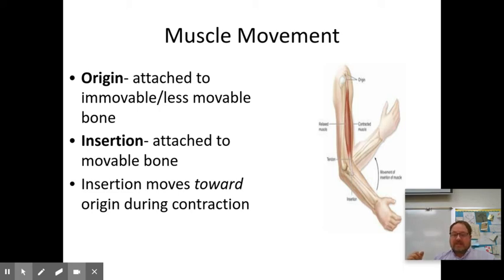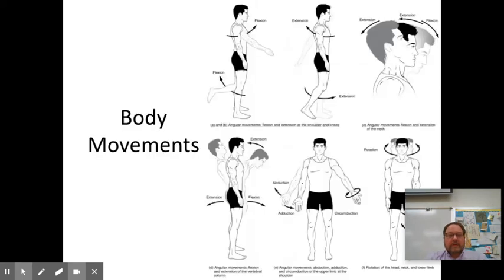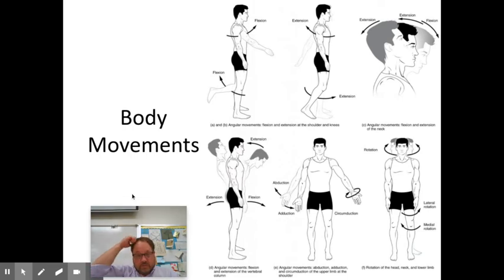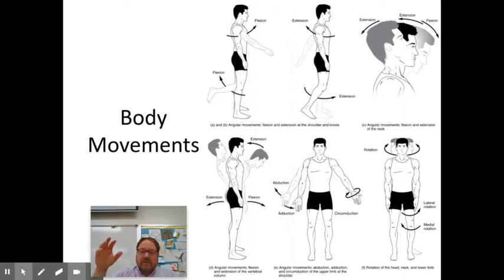The idea is you have the muscle attached at two different points spanning a joint. When the muscle contracts, the joint moves and one bone is brought toward another. Flexion is decreasing the angle of a joint, and extension is increasing the angle of a joint.